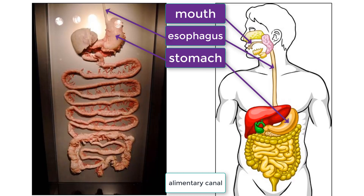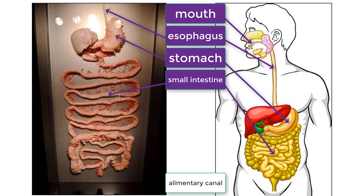Once in your stomach, food begins to be chemically broken down into smaller components. It is very acidic and it is the location where proteins begin to be broken down. After your stomach, the nutrients get pushed through the small intestine. Specific types of food continue to be broken down in the small intestine.